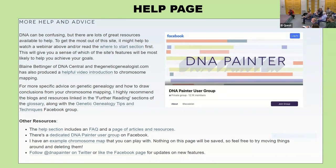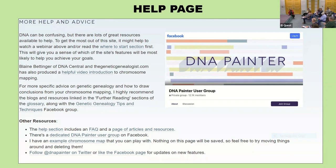DNA Painter has a dedicated Facebook user group. If you're not on Facebook for your genealogy research, you really should be — I do so much research there with DNA groups from all over the world. There's a Facebook group for ancestry DNA, DNA Painter, MyHeritage ethnicity, and every country in the world. I'm currently in about 187 groups.